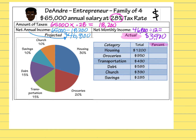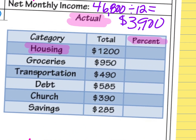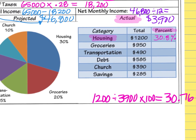For example, for housing, the amount was $1,200. So I calculate $1,200 divided by $3,900, then times 100, which makes it turn into a percent for the final answer. I get 30.76, which I can round to 30.8%. I'll leave one digit behind the decimal to stay as close to 100% as possible for the total.